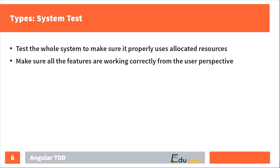Another type of test is the system test, sometimes called an end-to-end test. Such tests check that the whole system behaves properly. We can simulate the user's behavior and perform quite complex operations on our system — virtually simulating how a user interacts with the application, how they visit various pages, click on buttons, fill in forms — making sure the application is working properly from the user's perspective.